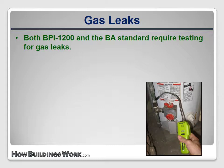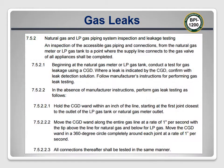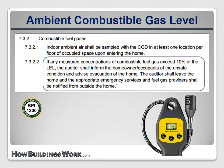Both BPI 1200 and the BA Standard require testing for gas leaks and verifying any leaks with a bubble solution, and both require that repairs to any leaks be included in the work scope. BPI 1200 adds a requirement to measure ambient gas level in the house to ensure gas leaks aren't creating an explosive condition. If the level exceeds 10% of the lower explosive limit, the auditor shall inform the occupants of the unsafe condition, advise evacuation, leave the home, and notify emergency services and fuel gas providers from outside the home.